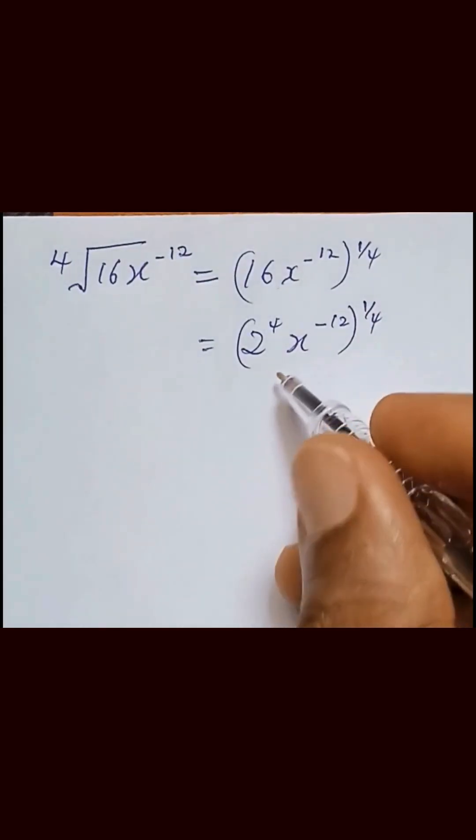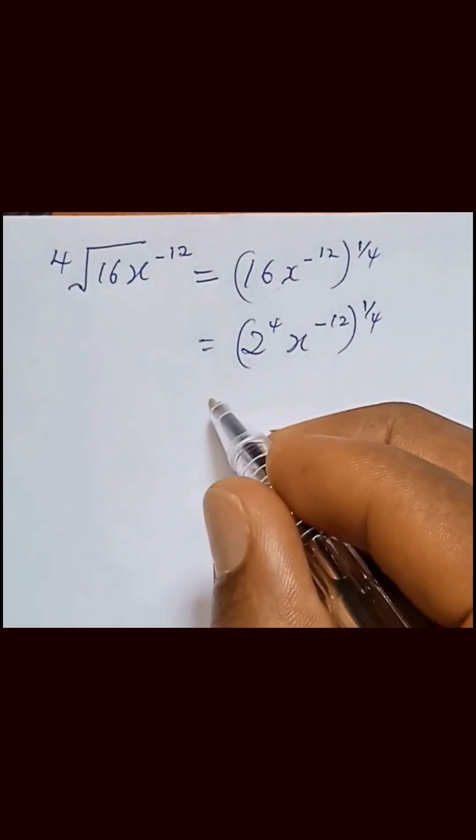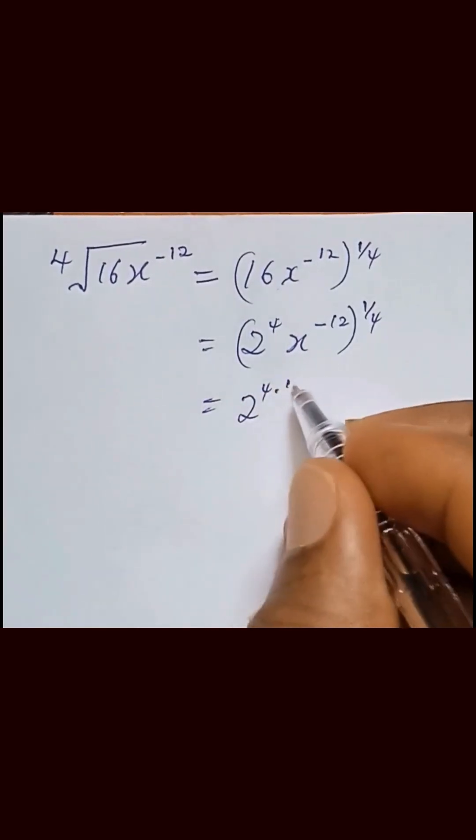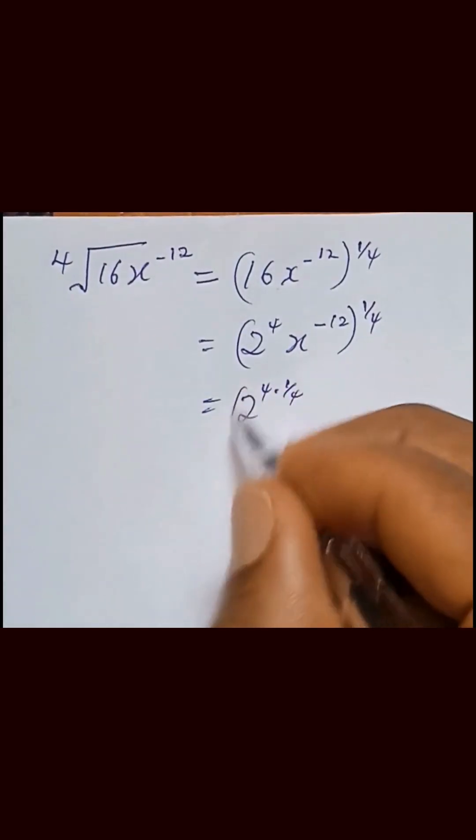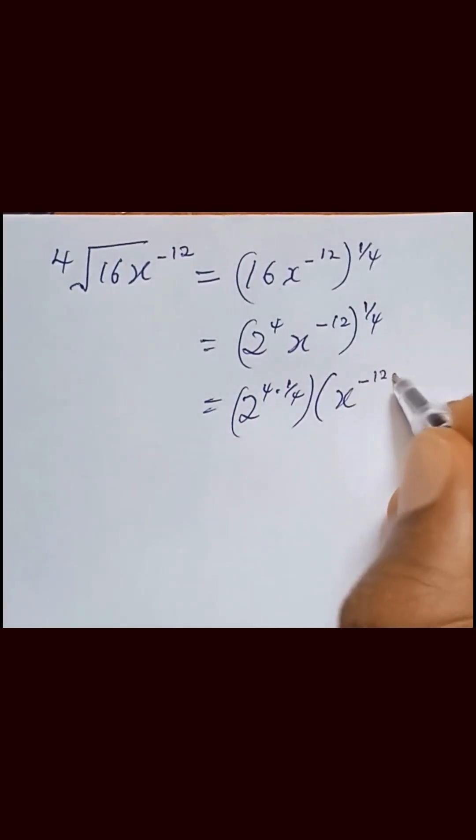So from here, we have this to be equal to... then we multiply the power by what we have in the bracket. That will give us 2 raised to the power 4 multiplied by 1 over 4, then x raised to the power minus 12 multiplied by 1 over 4.